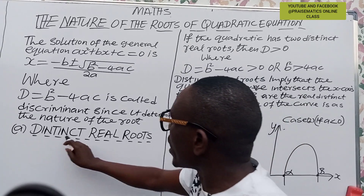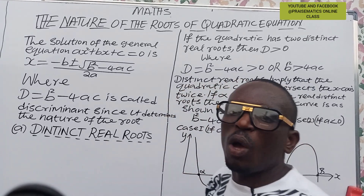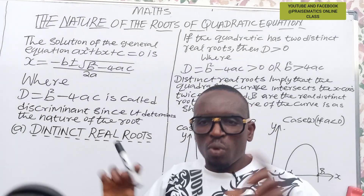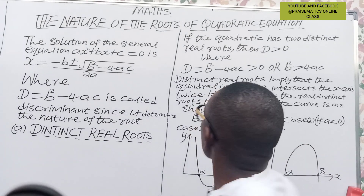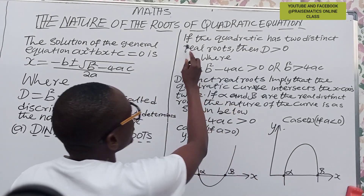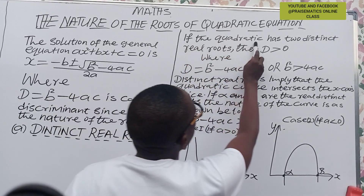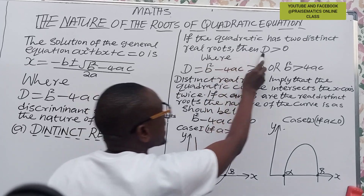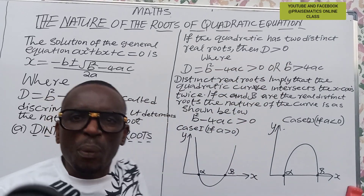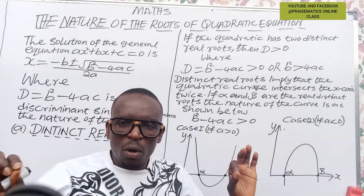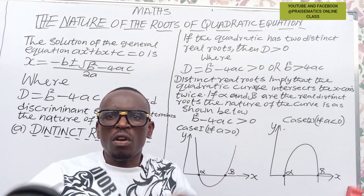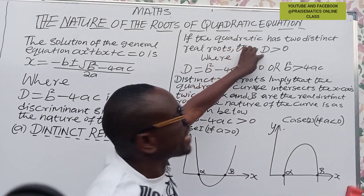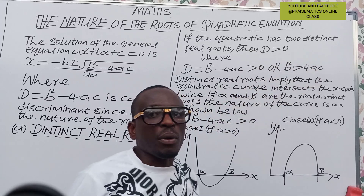The first is what we call distinct real roots, or different real roots. This is the situation whereby, after solving, you get different real roots. If the quadratic has two distinct real roots, then D will be greater than zero. For example, roots like three and four, or three and five — they are different, they are distinct, and the discriminant will be greater than zero.